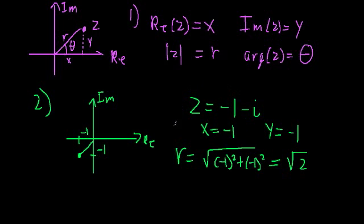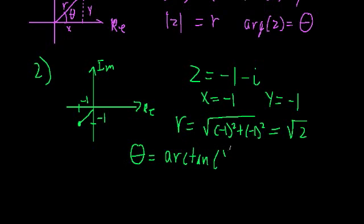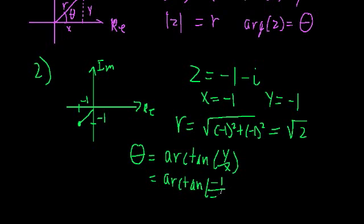Now here's the important part — figuring out the value of theta. I mentioned in the last video that one formula you might see is theta equals the arc tangent of y over x, that is the imaginary part over the real part. I also mentioned that this isn't really true all of the time, and we're going to see that in this example. If we just apply this formula, theta equals the arc tangent of negative one divided by negative one, which is the arc tangent of one, equal to pi over four.